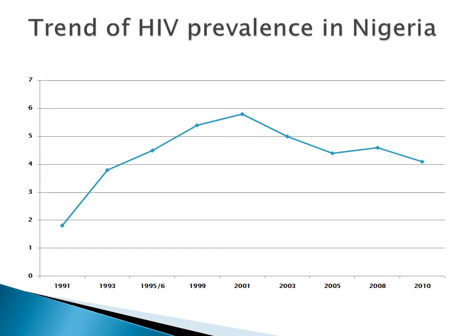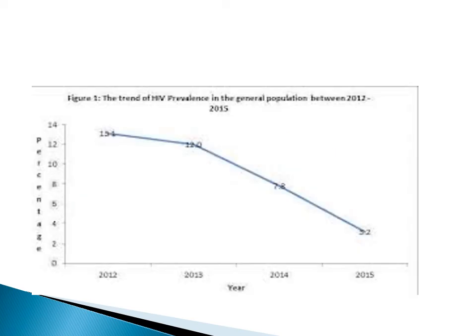The trend of HIV infection over the years shows the first sentinel survey in 1991, with an increase through 2001, then a drop from 2003 to 2005, a slight increase in 2008, and then consistent decline through 2010. Data from 2012 to 2015 shows a consistent drop in rates. The latest NAIIS survey gives 1.4%, though it is difficult to compare directly with older surveys because it used a different methodology — household-based rather than sentinel pregnant women.